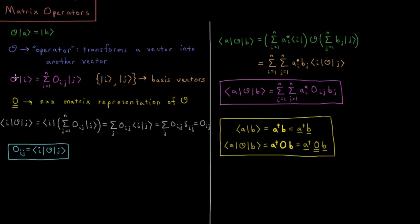If we have our operator acting on some basis vector ket i, that equals a sum from j equals 1 to n, sum over all n of our dimensions. We can have basically how much operator O transforms basis vector i into all of the other basis vectors j.